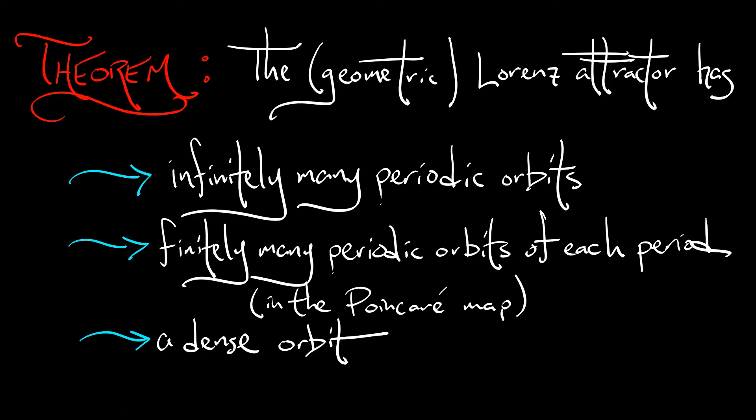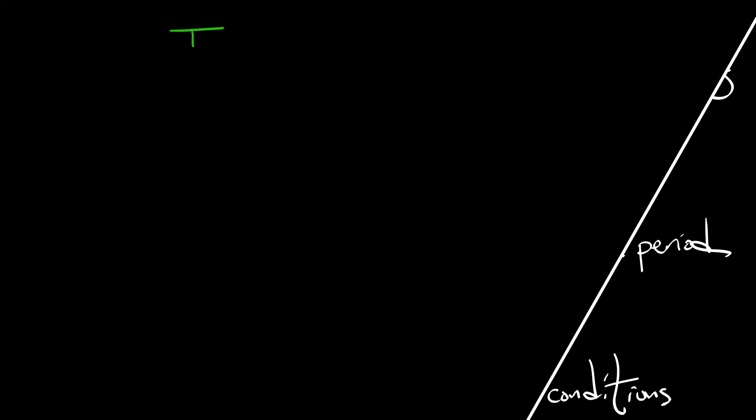And finally, the geometric Lorentz attractor has sensitive dependence on initial conditions. Now, this all seems like a tall order. How do we go about proving this? Well, here's the idea.